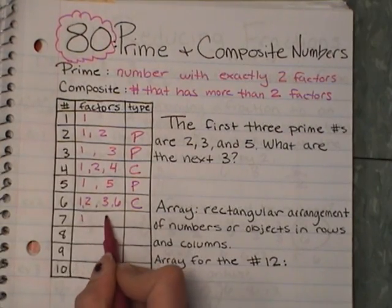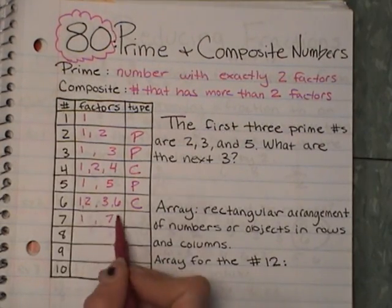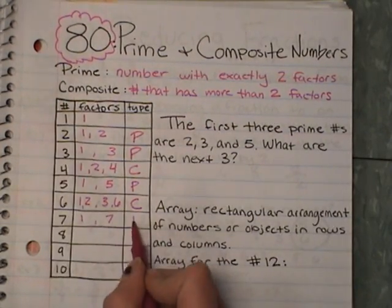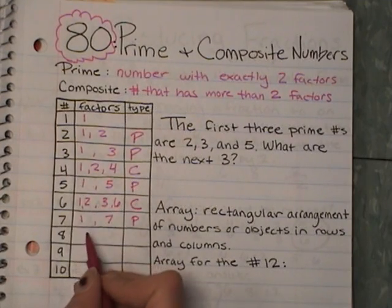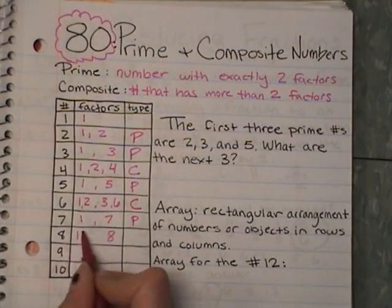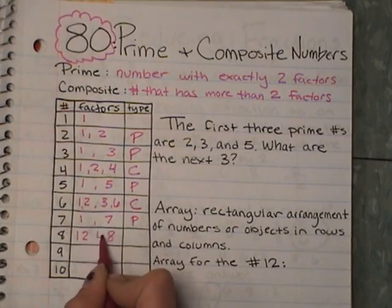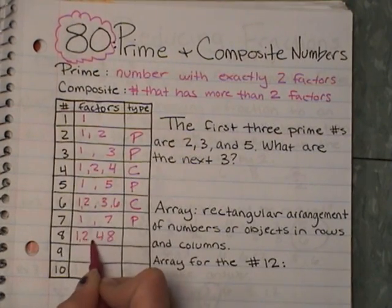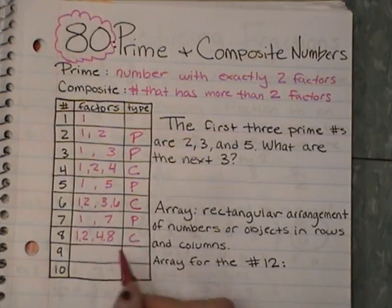7: 1 times 7. Nothing else goes in — prime. I have 8: 1 times 8. Does 2 fit in? Yes. 2 times what? 4. So here I actually have 4 factors. That would be composite.